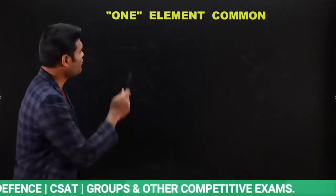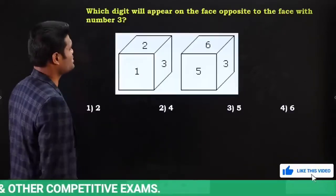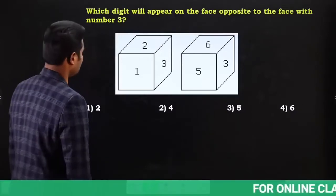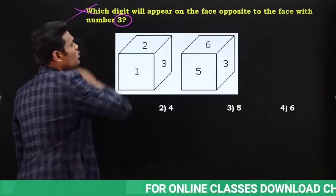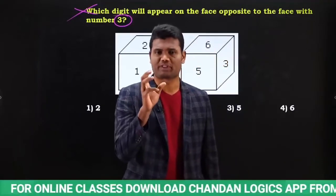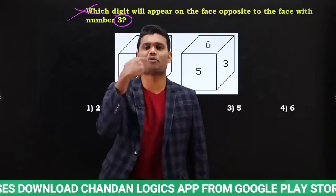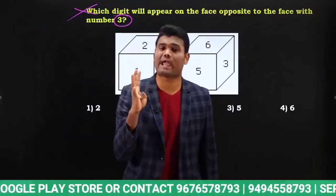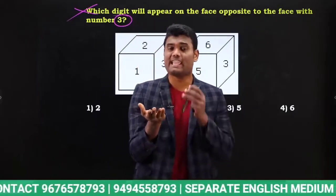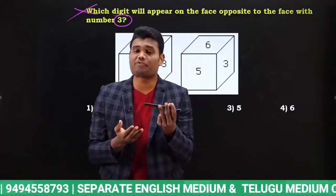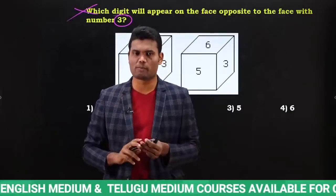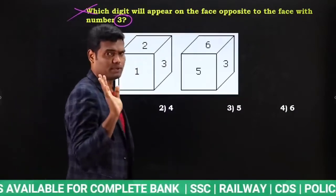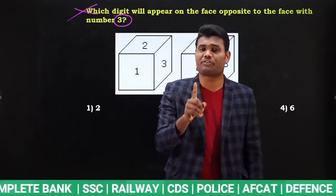First we will discuss Model 1 — one element common. Here is a question: which digit will appear on the face opposite to number 3? In a die we have total six surfaces; for each surface there is one opposite surface and four adjacent surfaces. The opposite surface is never visible, but four adjacent surfaces are visible. That is the reason whenever the examiner frames a question, he always asks what is opposite — because for each surface there is only one opposite surface.